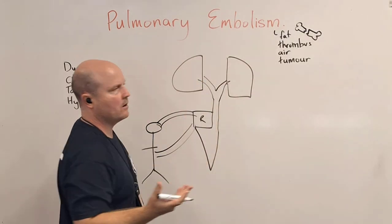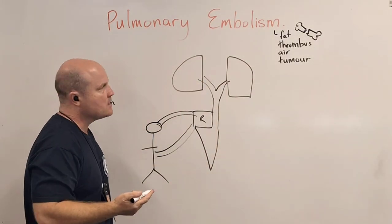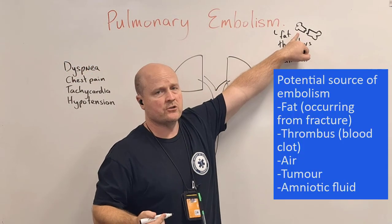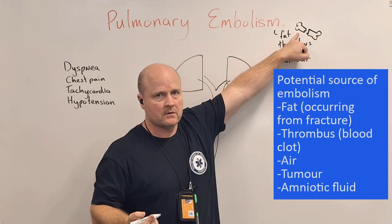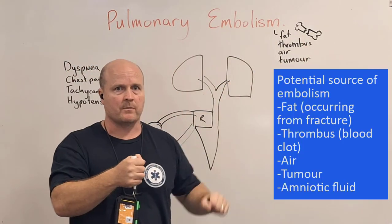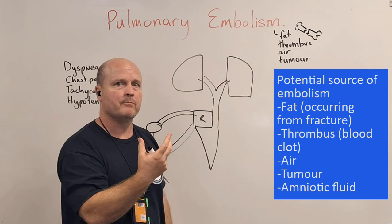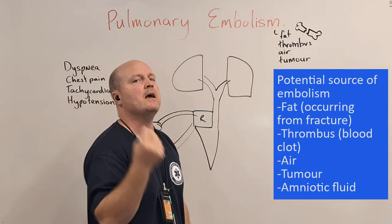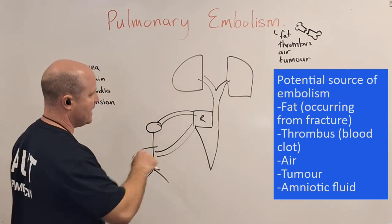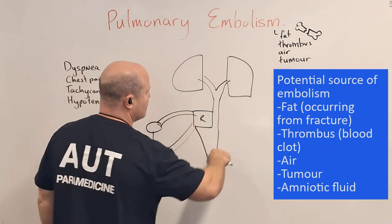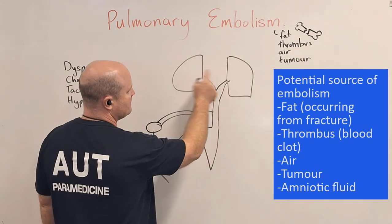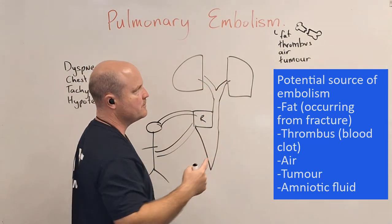So where does the clot come from? Someone could have had a fractured bone and the fat gets released from the marrow in the bone, and that could enter the bloodstream and go via the right side of the heart into the lungs.